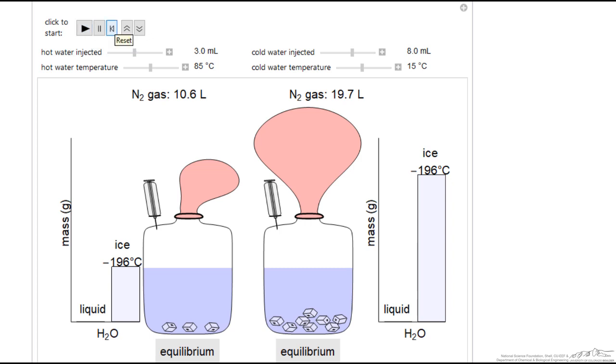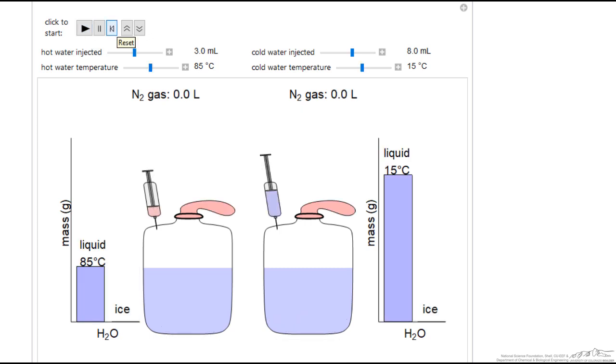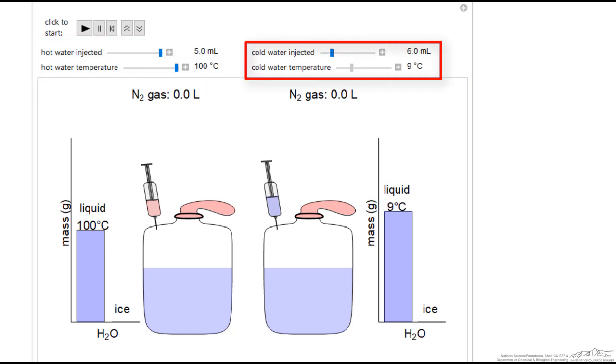We can reset this and change the conditions. For example, we can add more on the left and we can make it much hotter. Whereas we could add a smaller amount on the right and make it colder.